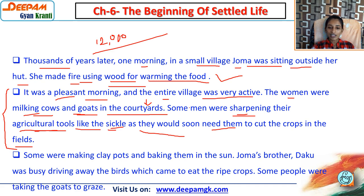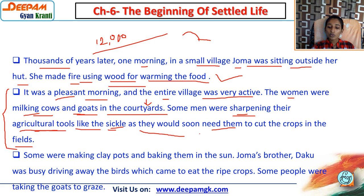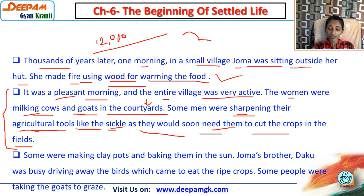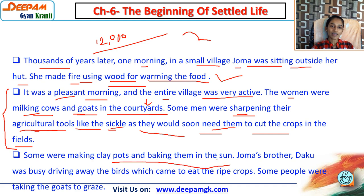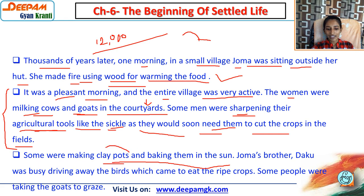They were sharpening tools like the sickle - used to cut grass and crops - because they would soon need them to cut their crops in the fields. Some were making clay pots and baking them in the sun, giving us the idea of early vessels.